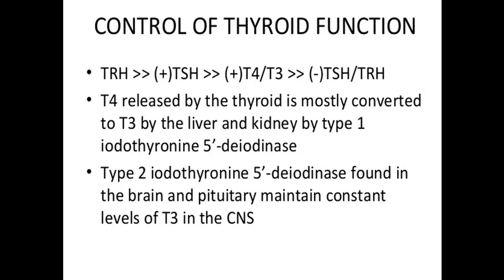T4 released by the thyroid is mostly converted to T3 by the liver and kidney via type 1 iodothyronine 5'-deiodinase enzyme. Type 2 5'-deiodinase is found in the brain and pituitary, maintaining constant levels of T3 in the TSH and CNS.